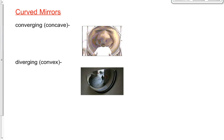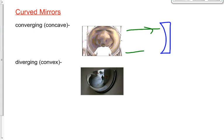We call it a converging mirror because rays of light coming off of our object hit the mirror and then converge — they come together. We also call it a concave mirror because if you look at it from the side, it's caved in — thinner in the middle than at the edges. Both names come from the fact that it's caved in and that rays converge: converging, concave mirror.